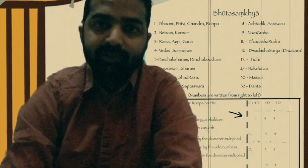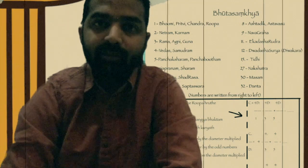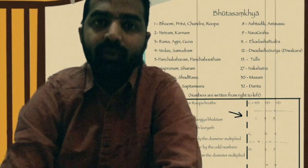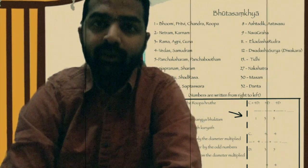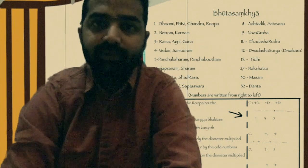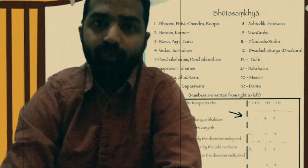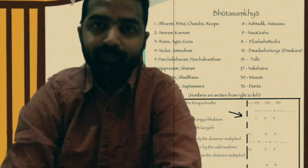In the Bhuta-sangya number system, the number 1 is represented by earth. Anything related to Bhumi, Prithvi, Dharthi, etc. represents number 1. Rupa — the form — also represents number 1.